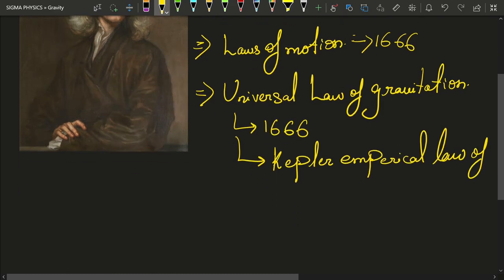Kepler's laws were empirical laws because he didn't give a mathematical derivation, which was given by the great Isaac Newton.